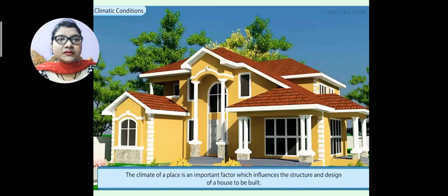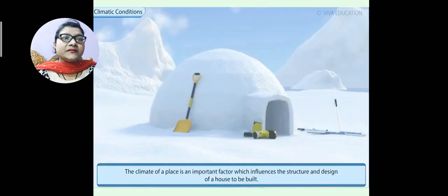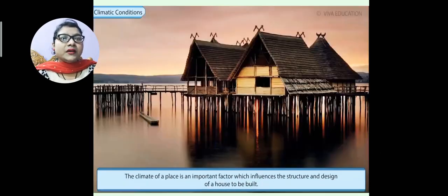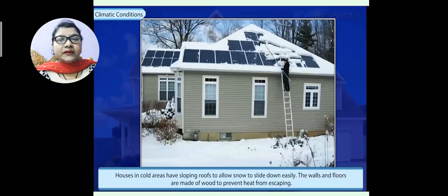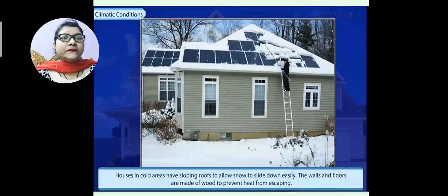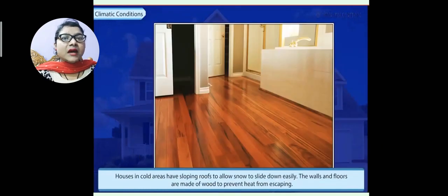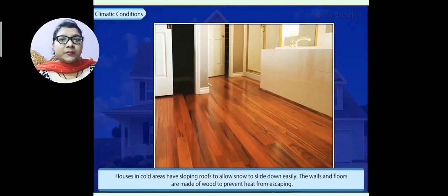We can see different structures of houses here — villas found in urban areas, and igloos. In cold areas or high mountain areas, people build houses with sloping roofs so that snow can easily slide down and not accumulate. The walls and floors are made of wood to prevent heat from escaping. You can see the interior of these houses is made of wood.